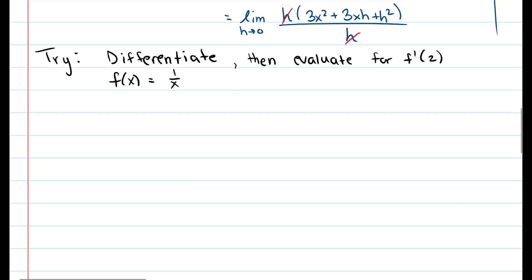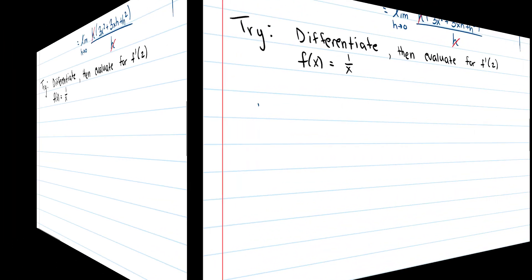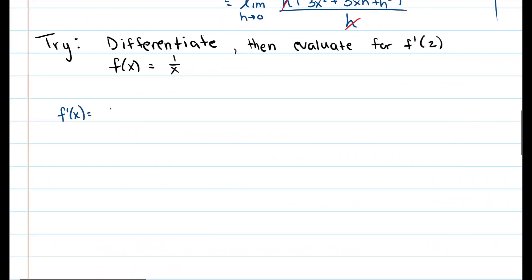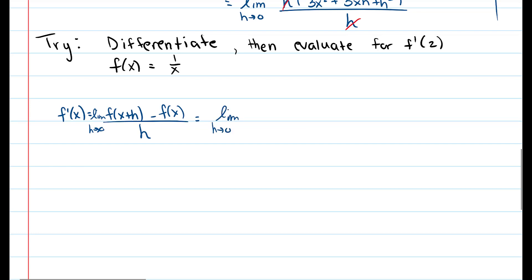Now on your own, I want you to try to differentiate and then evaluate this function. The function is f of x equals one over x. Differentiate it, determine f prime of x, and then evaluate it for f prime of two — plug in two to find the slope at that point. So f prime of x equals the limit as h approaches zero of one over x plus h minus one over x, all divided by h. Now we'll use algebra to simplify this down.